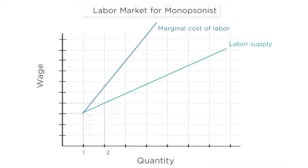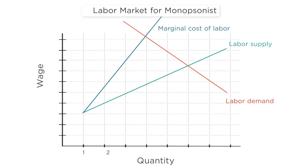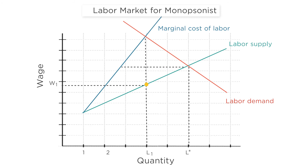So we can trace out a marginal cost of labor, and it's always above the labor supply curve. Like any firm, the monopsonist wants to hire the number of workers where the marginal cost of labor equals the marginal benefit of labor. What's different is that the marginal cost is above the labor supply curve. As a result, the monopsonist hires L1 workers, which is lower than L* that would be hired if demand simply equaled supply. What's the wage? The monopsonist's choice of labor is determined by where marginal cost crosses the labor demand curve, but the wage is determined by where the labor supply curve sits — down at W1, which is lower than it would be in a competitive labor market at W*.